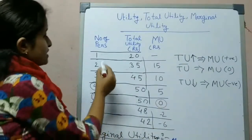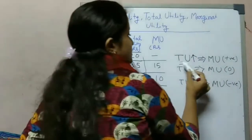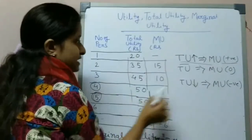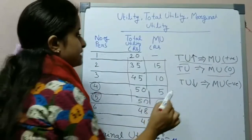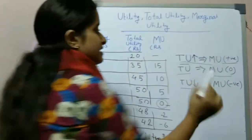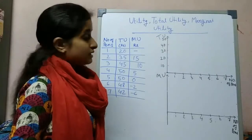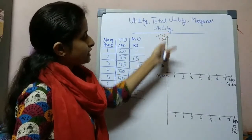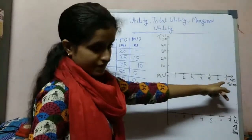We can explain this with a diagram. We measure total utility on the vertical axis and marginal utility also on the vertical axis. On the horizontal axis, we measure the number of pens.